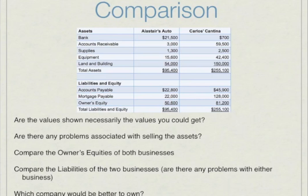Things will be easier for Alistair because his assets are lower in value, meaning less to sell. If both manage to sell all assets and pay off debts, Alistair will be left with $50,600 (his owner's equity), while Carlos will be left with $81,200. However, Carlos has far more debts and may never successfully sell enough assets to cover them, making his business riskier. Alistair's auto is the safer and better option — his bank account is closer to covering debts, whereas Carlos's Cantina is far off, making it the worst choice despite having larger owner's equity.